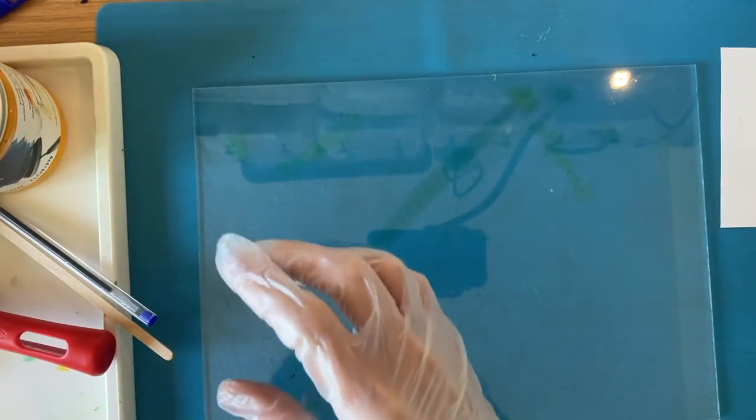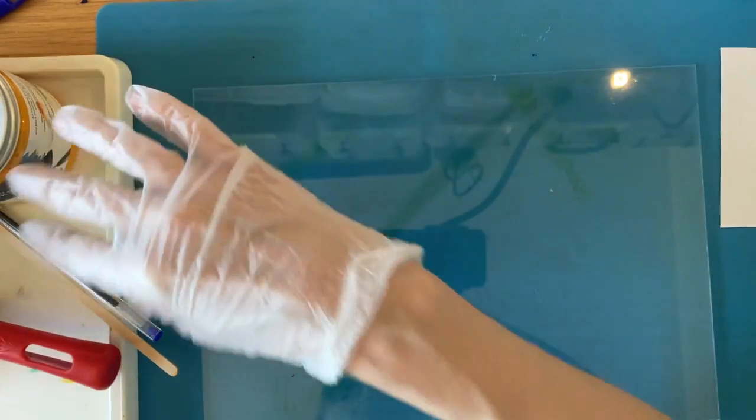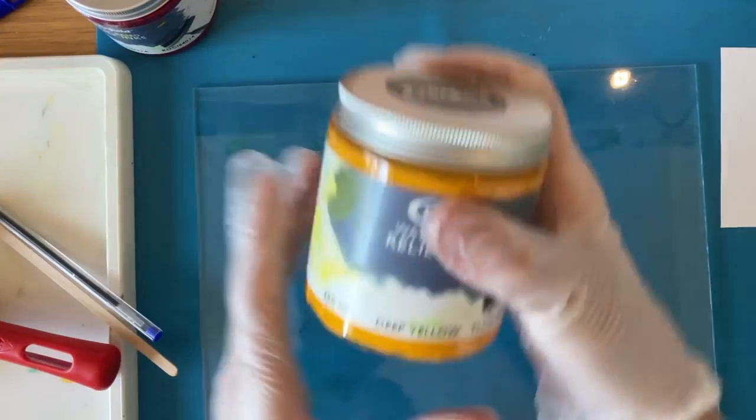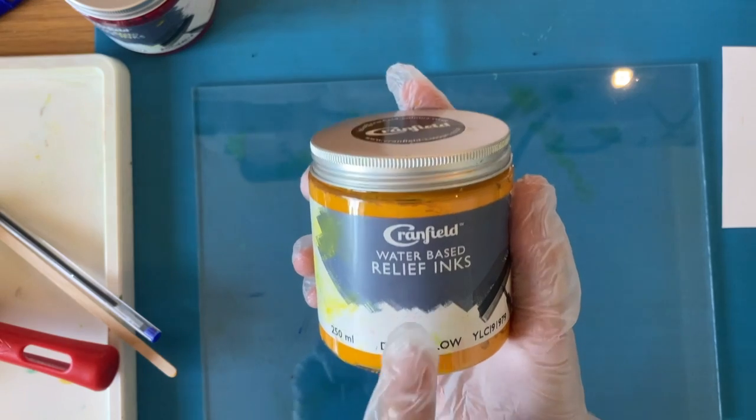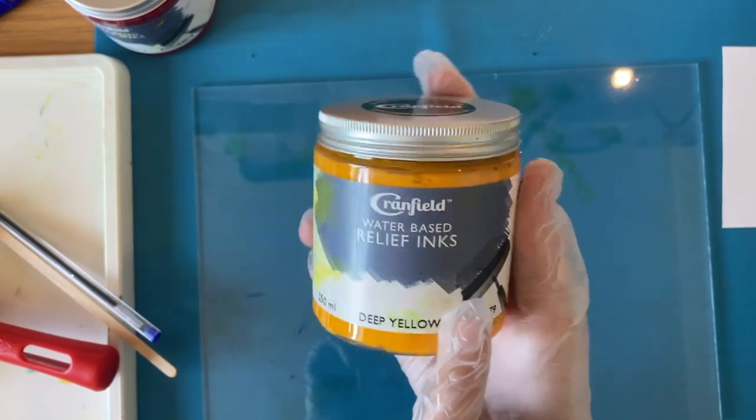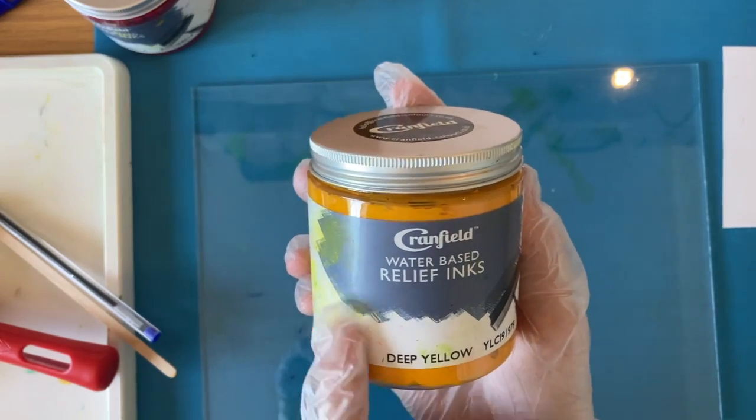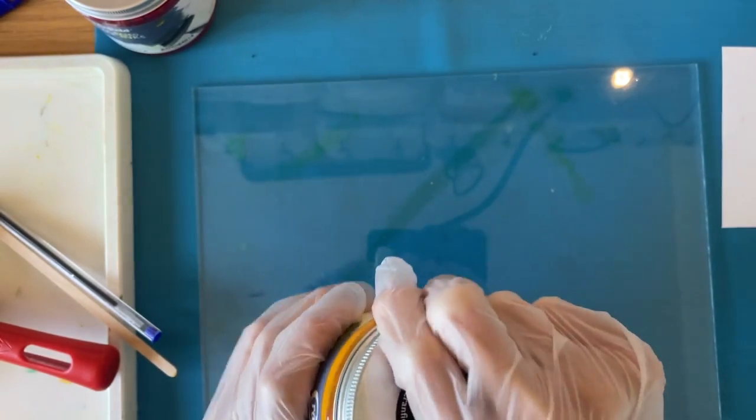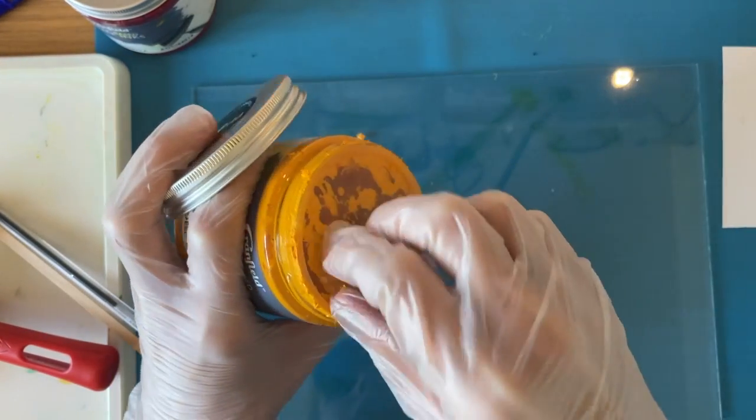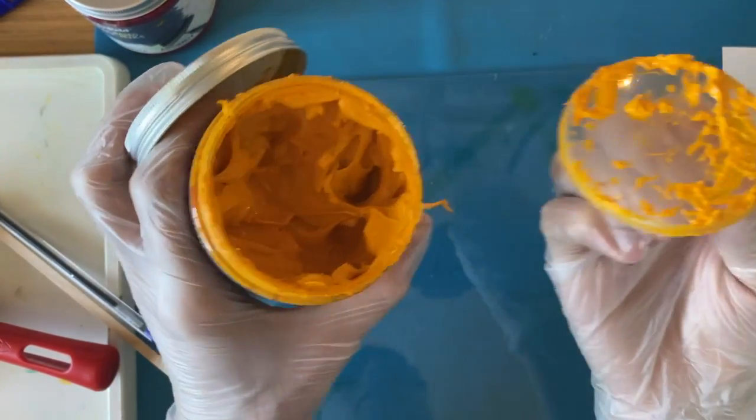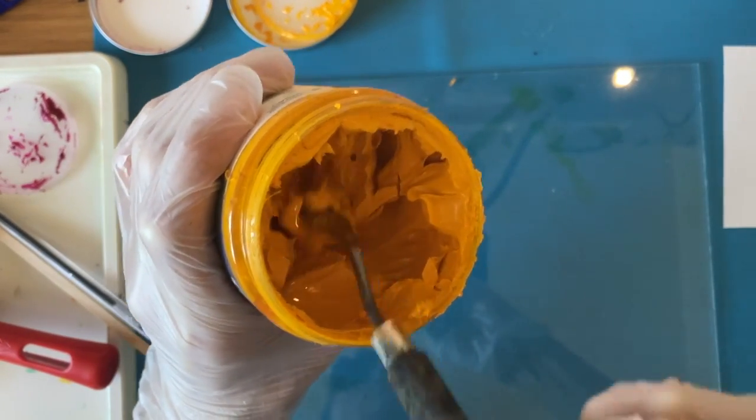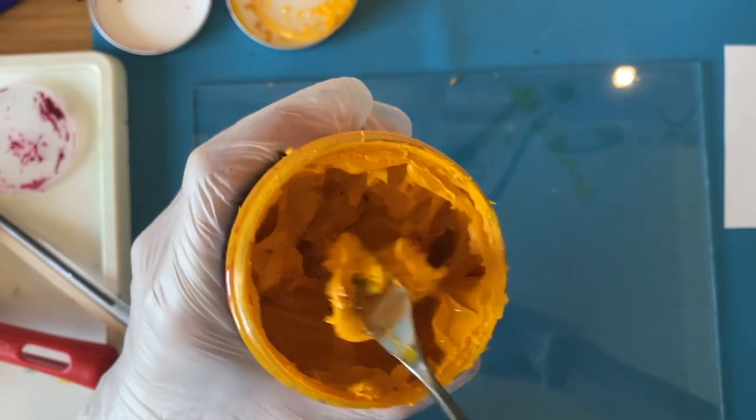You also have a tray to put all your dirty things on when you need to put them down, and you've got some special printing ink. So this is specifically for printing, it's called relief inks, and it's much thicker. You can still wash it with water, but you'll find if you open it up, you can use your palette knife to move it around.